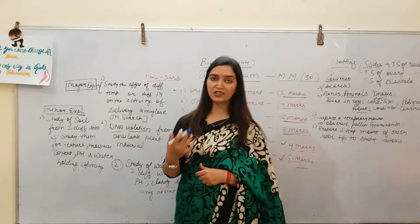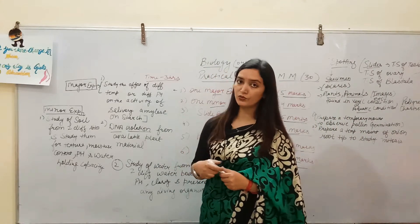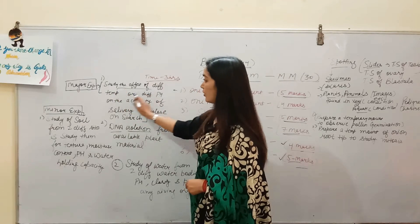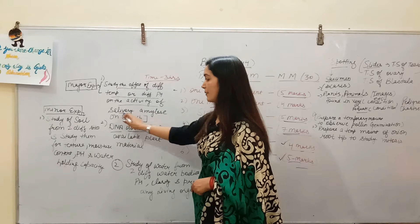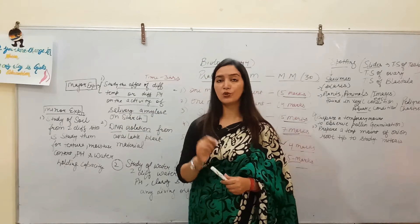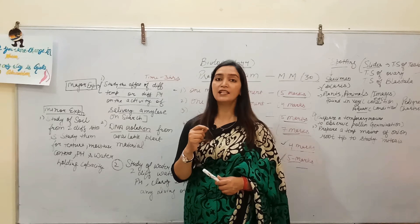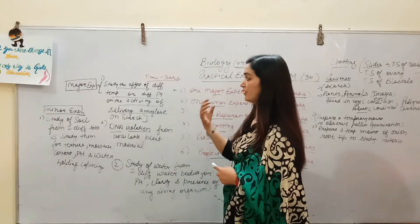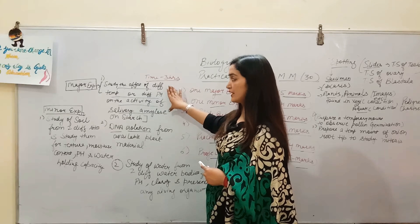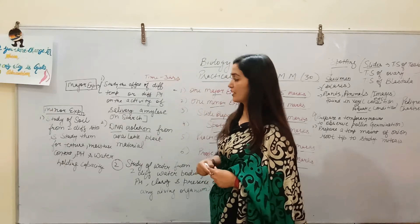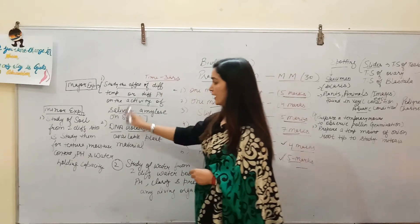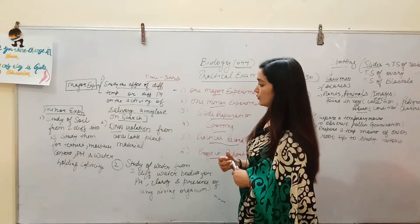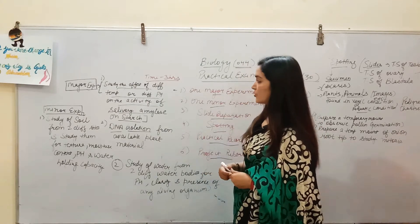Coming to the major experiment: this time you have only two experiments, and your examiner will give you one. Experiment number one is to study the effect of different temperatures or different pH on the activity of salivary amylase. Salivary amylase is an enzyme present in saliva responsible for about 30 percent of starch digestion. You have to study how salivary amylase is affected by different temperatures or pH, and write your observations and results.